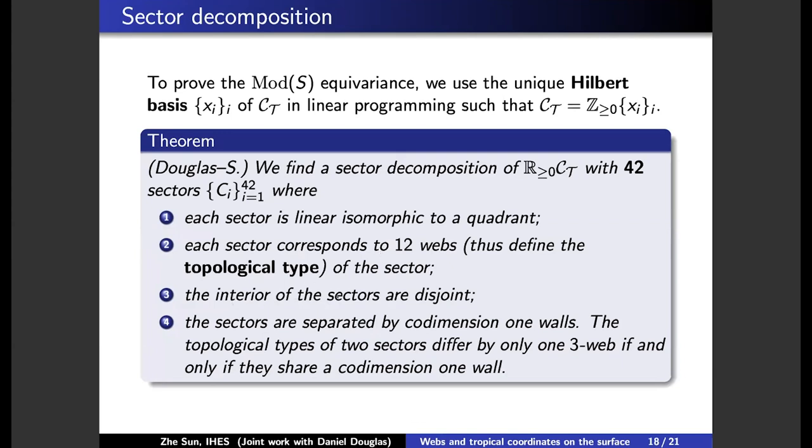And the sectors are separated by codimension one walls. The topological type of two sectors differ by only one 3-web if and only if they share a codimension one wall.